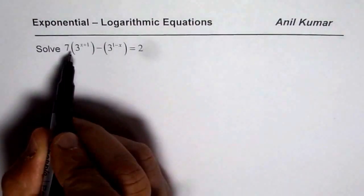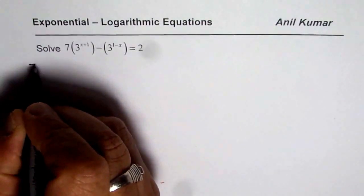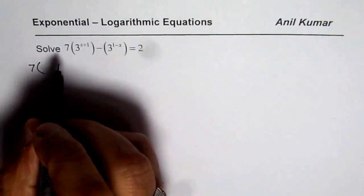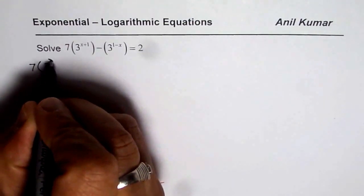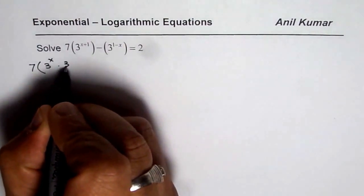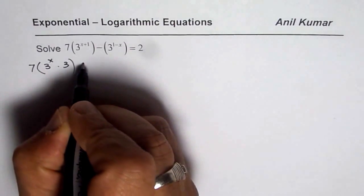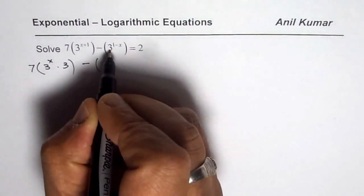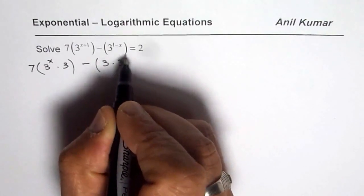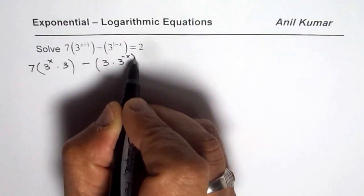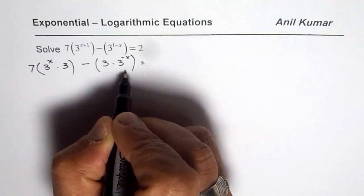Let us expand this and see what it really is. When I say 3 to the power of x plus 1, it really means 3 to the power of x times 3. And 3 to the power of 1 minus x means just 3 times 3 to the power of minus x, which means 1 over 3 to the power of x.